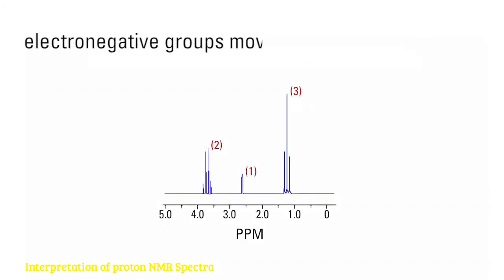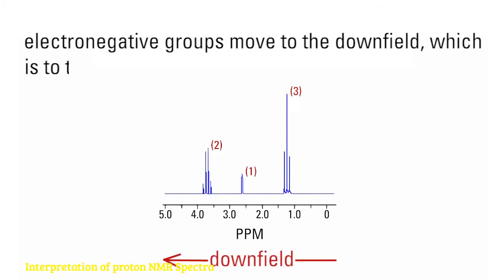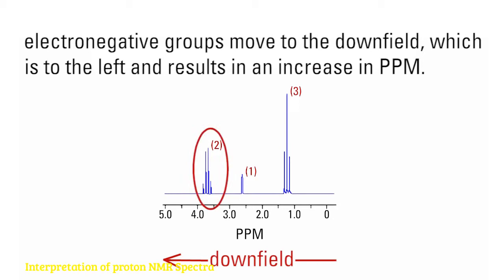Electronegative groups move to the downfield, which is to the left, and results in an increase in ppm. In our case, the CH2 group is closer to the oxygen directly attached to it, so its signals are shifted to the left.